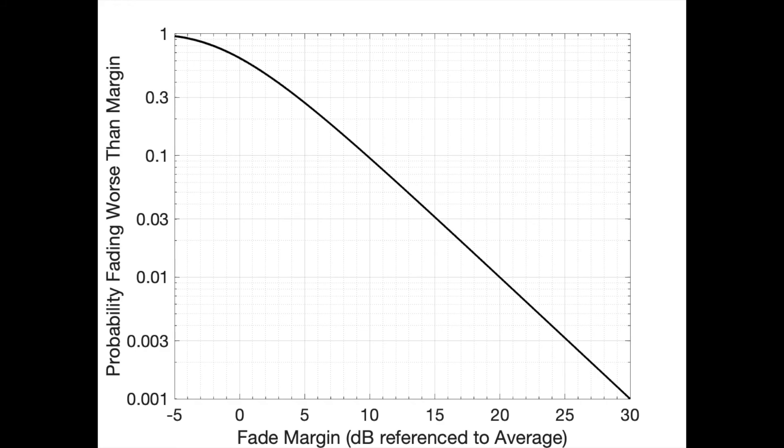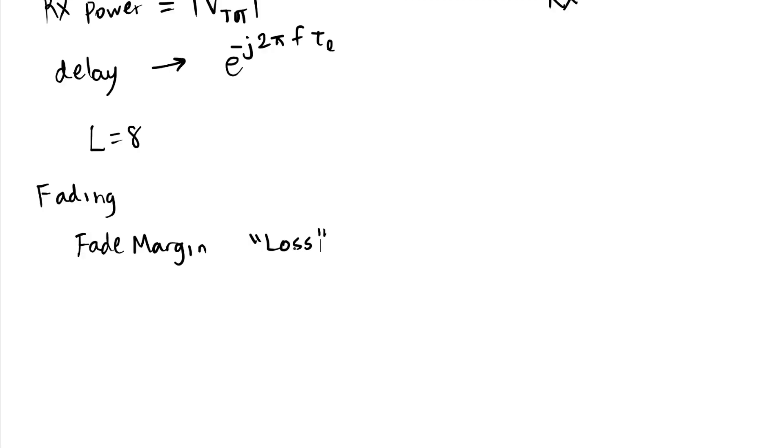As another example, you could set a fade margin of 30 dB and there'd still be a 0.1 percent chance that the signal experiences a fade worse than that 30 dB fade margin. This is a very severe problem in mobile communication since we don't usually have 30 dB to spare in our link budget. So there is a problem with multi-path fading, especially when you have a single antenna and you don't use a diversity technique like we're going to talk about in the next two videos.